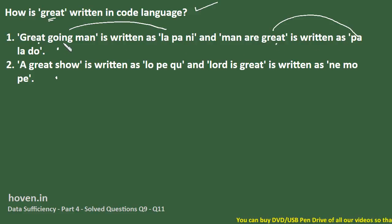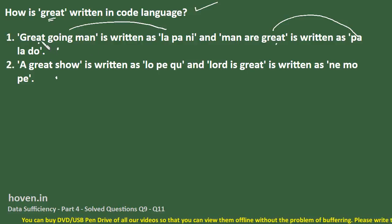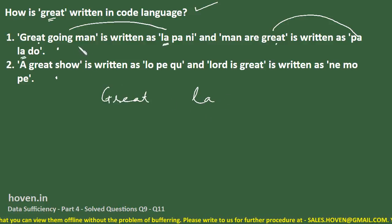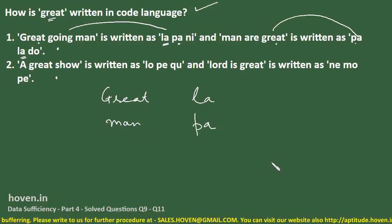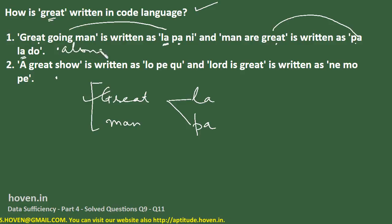We can also see that 'going' appears only in the first statement, but 'man' appears in both. So the code for 'man' will also be common. 'La' is common to both codes, so 'great' could be 'la'. But 'pa' is also common, so 'man' could be 'pa'. Therefore, we cannot clearly tell what the code for 'great' is — it could be 'la' or 'pa'. Statement one alone is not sufficient.